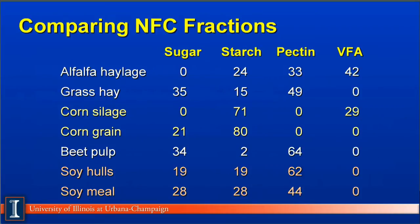This table from the New Dairy NRC illustrates the tremendous variation in the non-fiber carbohydrate fractions. Alfalfa haylage that has been well fermented will have no sugar because the silo bacteria have utilized it, and it is extremely high in volatile fatty acids such as acetic and lactic acid. Dry forage such as grass hay has no VFA but a fairly good source of sugar. Corn silage and corn grain are extremely high sources of starch. Beet pulp and soy hulls are excellent sources of pectin, allowing nutritionists and farmers to mix and match NFC fractions depending on the feedstuffs in the ration.